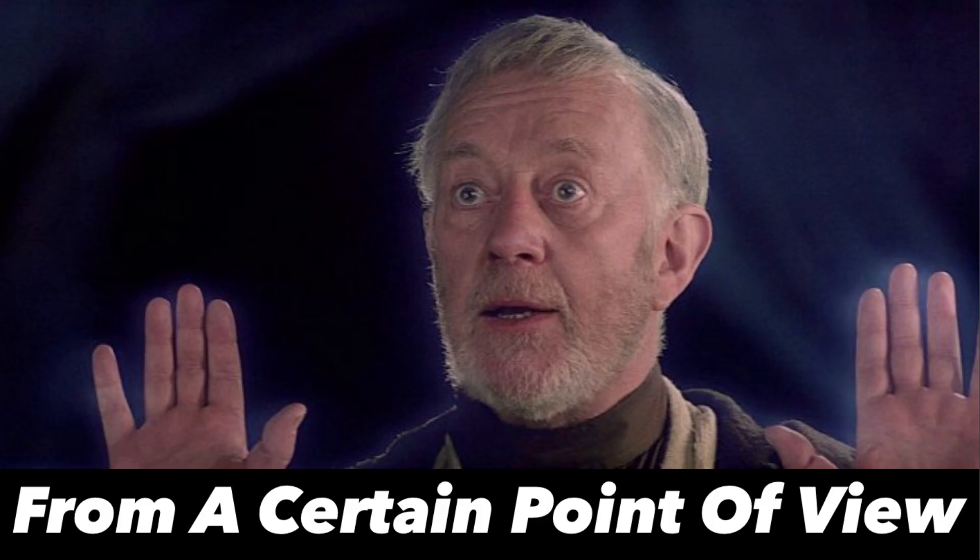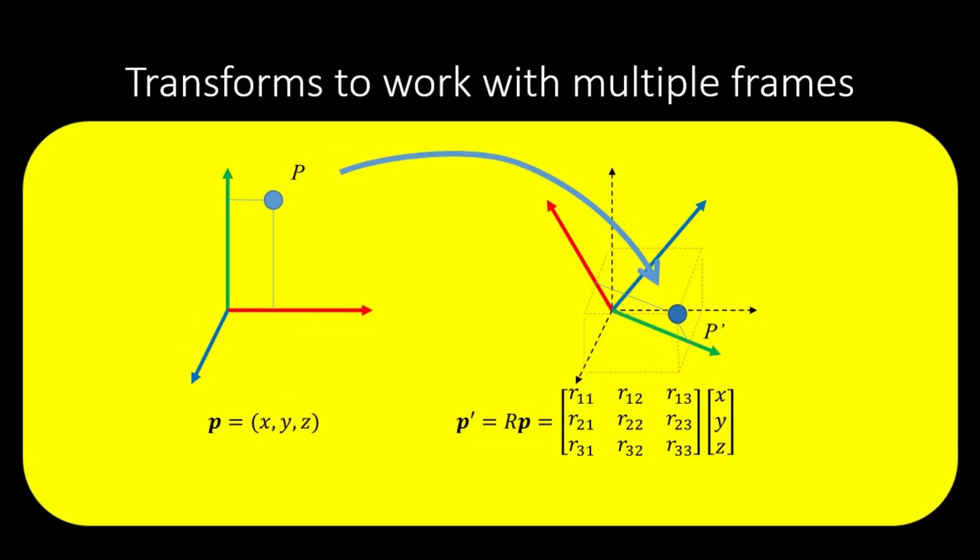Now we have an idea of the need for multiple coordinate frames, we need to understand how do we work with all these different coordinate frames. To represent a coordinate frame with respect to another, we need the relative position and the orientation of frame with respect to another. Encapsulating both of these, we get what we call a transform.